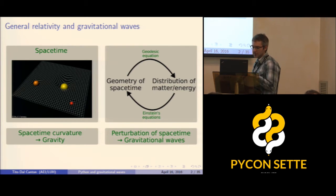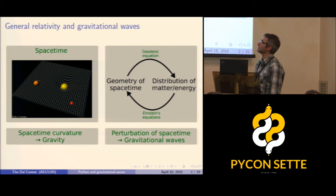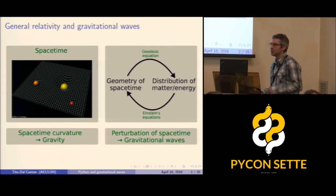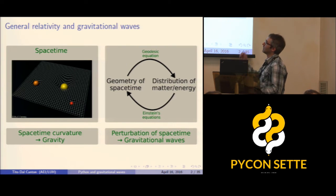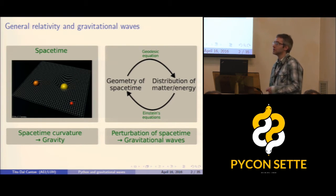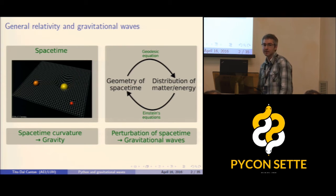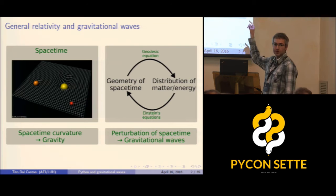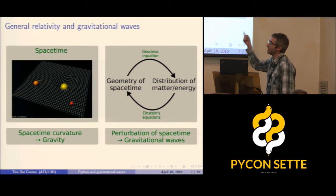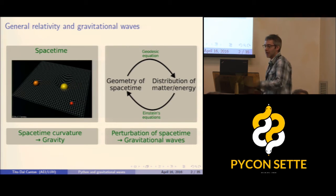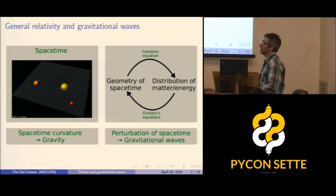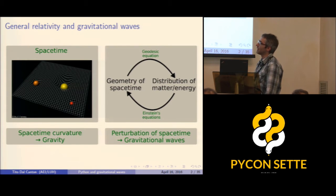The central idea of general relativity is space-time — a mathematical model representing the entire universe, where space and time are two different dimensions of this four-dimensional model. Everything in the universe, stars, matter, planets, energy, radiation, lives inside space-time, which has a geometry allowing us to calculate distances between points.